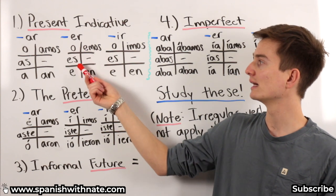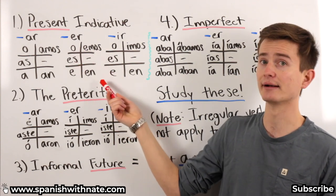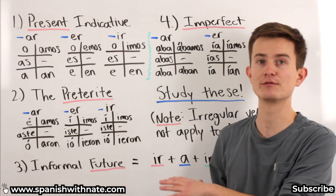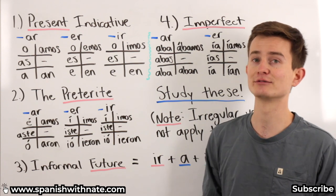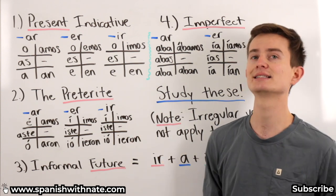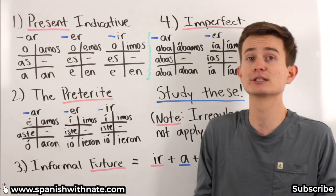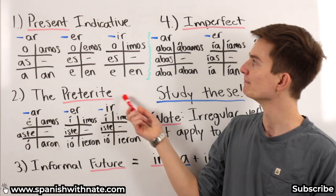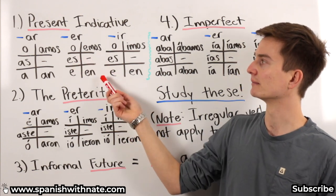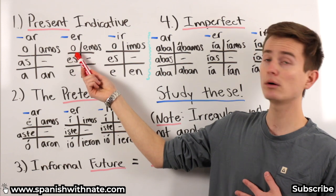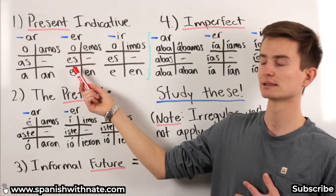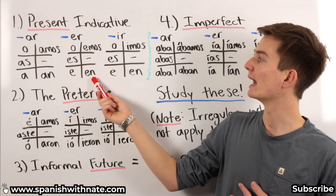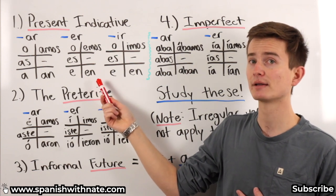Next for ER verbs. O, es, e, emos, en. Very similar to our AR verbs. Now, I'd like to say, feel free to take a photo of this because these are seriously the holy grail of Spanish learning. So if you can master these, study these, get these down, you're going to be able to learn any new regular Spanish verb and be able to instantly conjugate it into the present indicative tense. O, es, e, emos, en. Yo, como, tu, comes, el, ella, usted, come, nosotros, comemos, ellos, ellas, ustedes, comen.